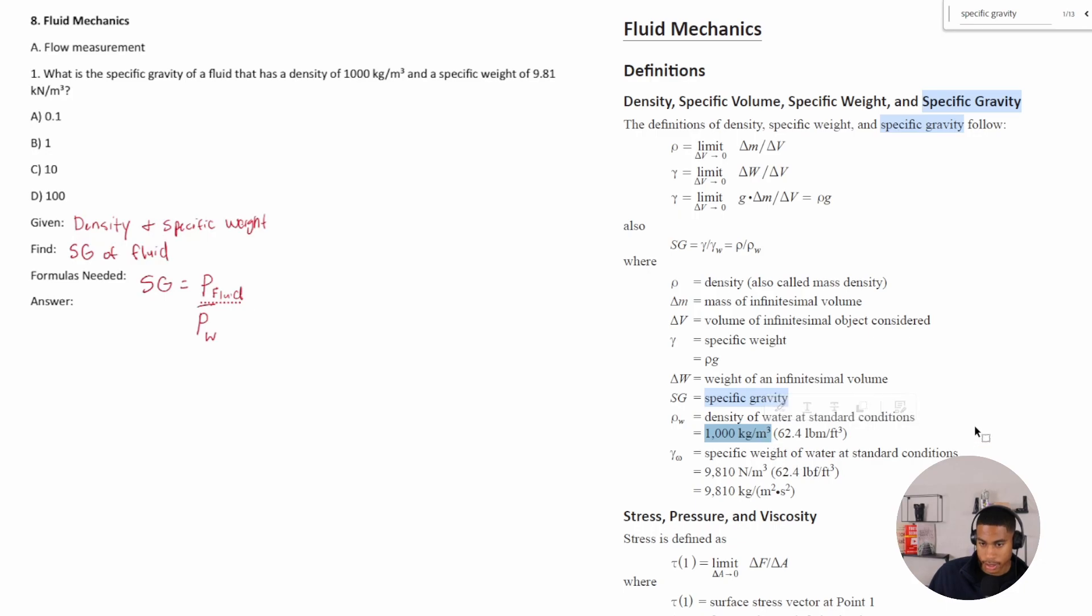All right, so this is going to equal the density of the fluid is one thousand kilograms per meter cubed all over the density of water, which in this case is the same. This is not always the case. All right, and what do we get? Well, everything just cancels out to equal one, so our answer is B.